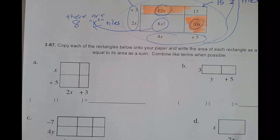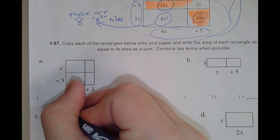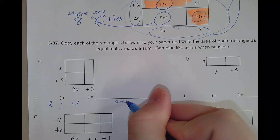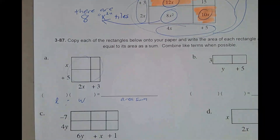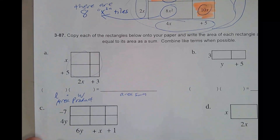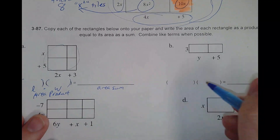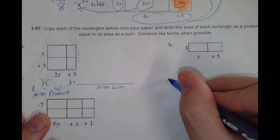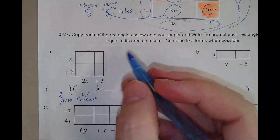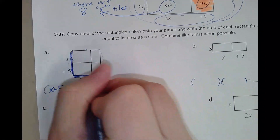Number 387 gives us good practice using area models. Remember: the area product is length times width. The area sum is when you add up everything inside. If you see parentheses, that means it's a product — it's multiplying length times width. So for this first one, the product is x plus 5 times 2x plus 3.